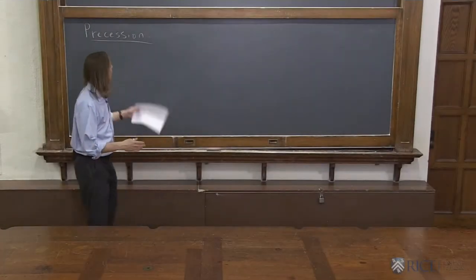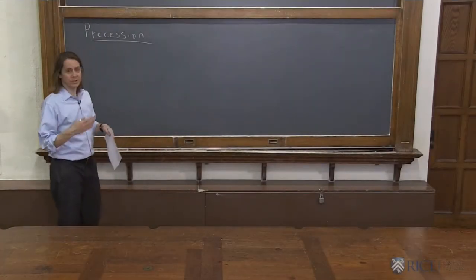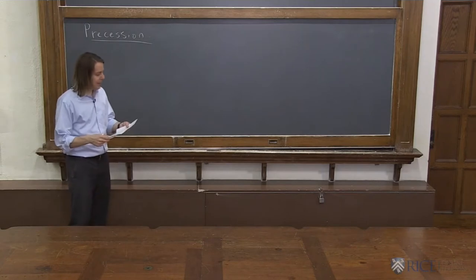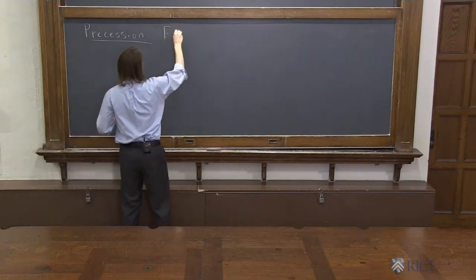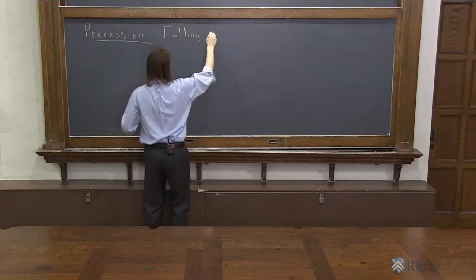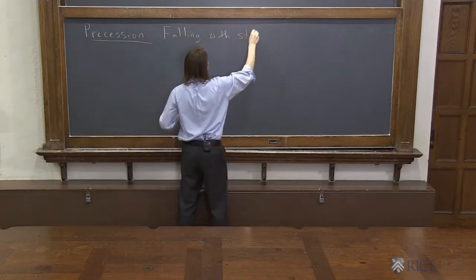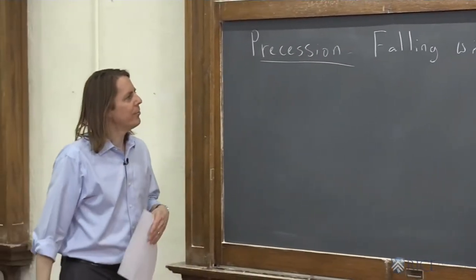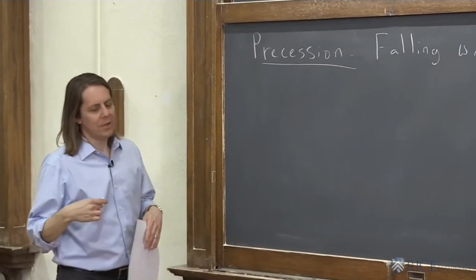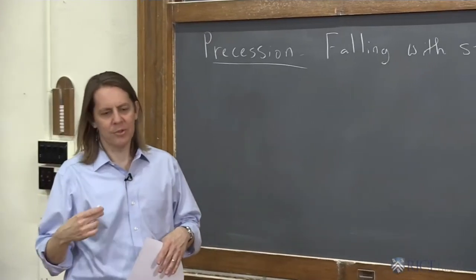And now a property of rotating objects called precession that you can understand with angular momentum. I'm going to give precession the simple definition of falling with style. We'll get a more mathematical definition going later, but for now that's really what it is, because the way to first start thinking about precession, I think...